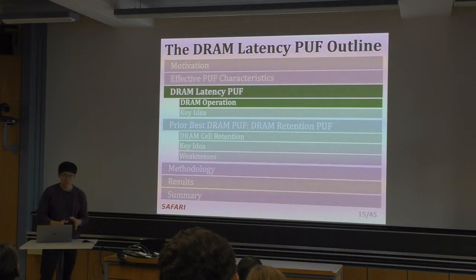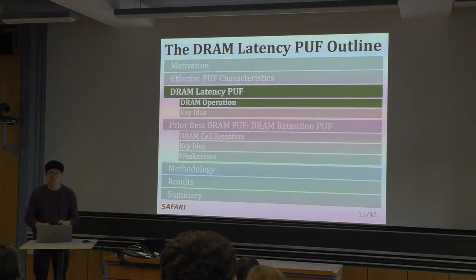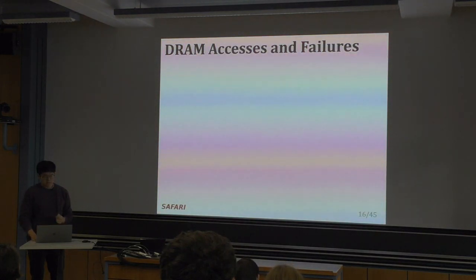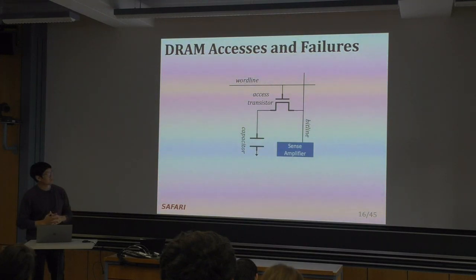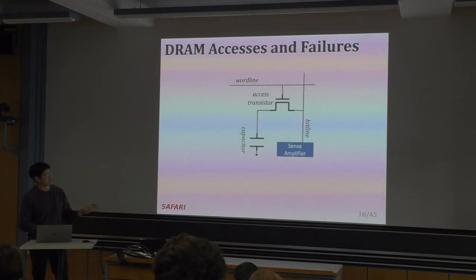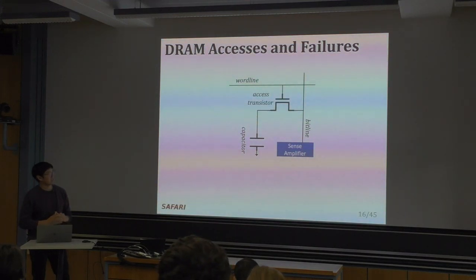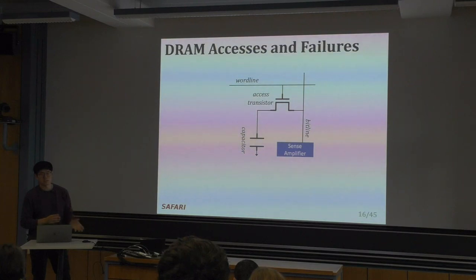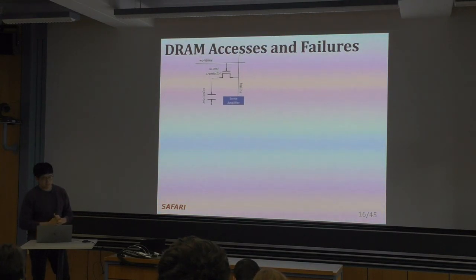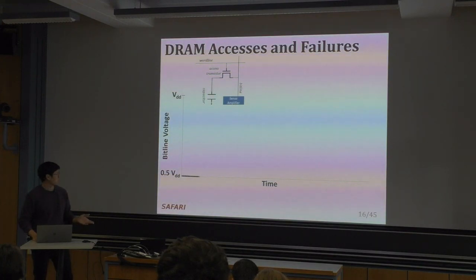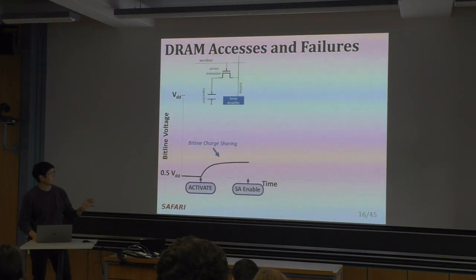Now we'll talk about the DRAM Latency PUF mechanism, but first some DRAM background. DRAM cells comprise a capacitor and an access transistor; data is stored in the capacitor as high or low charge representing 0 or 1. Data is transferred via the bit line and amplified via the sense amplifier. Data is read by activating the word line, which opens the access transistor so data can be detected on the bit line. Initially the bit line is held at 0.5 VDD, and when we activate the word line, the capacitor charge begins to share with the bit line—we call this bit line charge sharing.